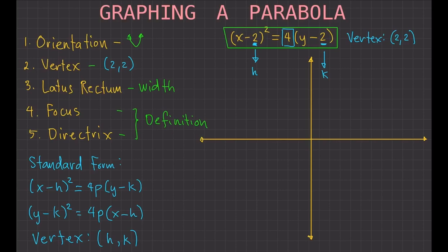The next thing we want to know is how wide the parabola is going to be, so let's find the latus rectum. The latus rectum is that number outside the parenthesis on the right-hand side of the equation — the same number we identified when looking at the orientation. That number is the latus rectum, so the width of the parabola is 4.